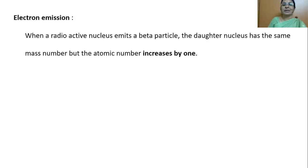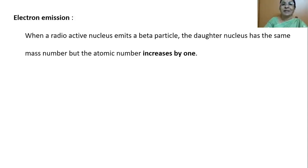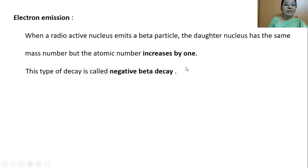Electron emission: When a radioactive nucleus emits a beta particle, the daughter nucleus has the same mass number but the atomic number increases by one. This type of decay is called negative beta decay. The nucleus that gives out radiation is called the parent nucleus, and the newly formed nucleus is called the daughter nucleus. This daughter nucleus will have the same mass number but the atomic number increases by one — this is called negative beta decay.